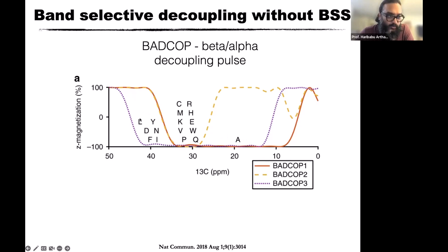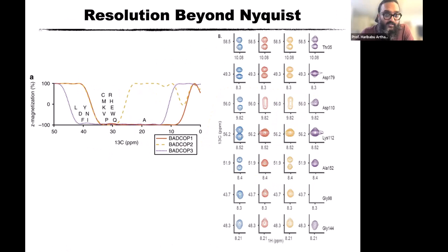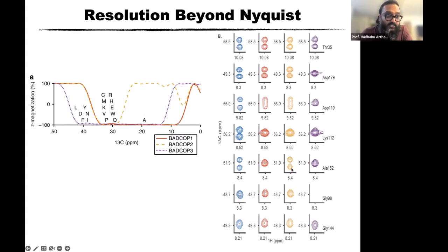Going back to the degeneracy problem: sitting on a C-alpha with multiple degenerate matches, using the yellow pulse one match splits into a doublet while others become a singlet. With the red pulse it still remains a doublet. Following the peak I'm looking at with different pulse choices and different peak shapes, I can tell which is the correct match. The C-beta-specific information is incorporated based on the choice of decoupling profile — a yes/no type here — and Paul is now working on gradient-type decoupling where it's partially on or partially off, giving very intricate peak shapes.